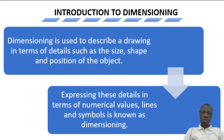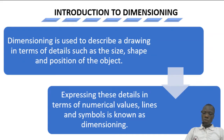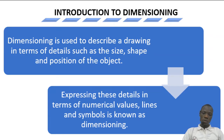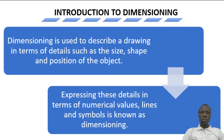So we can describe dimensioning as a way of trying to determine or indicate the size of an object, a way of describing the shape of the object, or the position of the object. It is used to describe a drawing — in terms of the size, the shape, and the position of the drawing. As we express these details in terms of numerical values, lines, and symbols, that process is termed dimensioning.